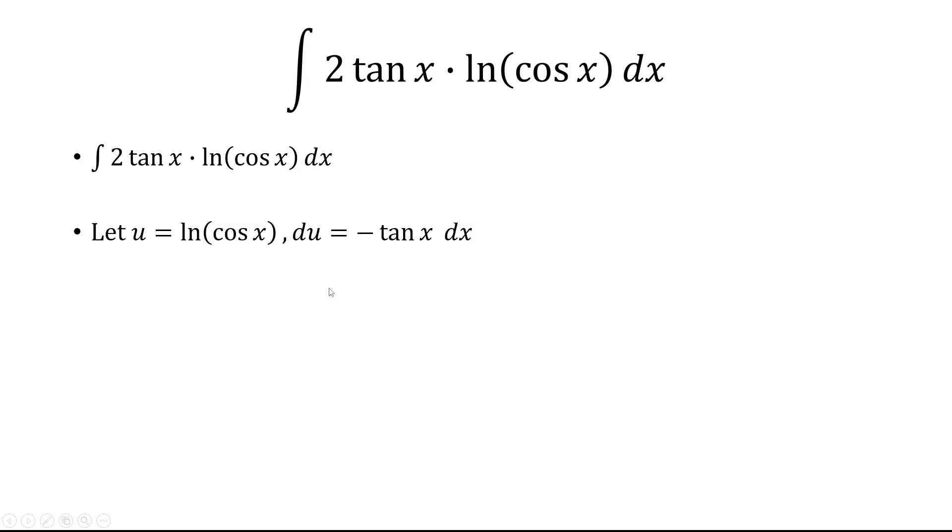We're going to let u equal ln of cosine x, and the derivative will just be 1 over cosine times the derivative of cosine, which is negative sine. That's just going to equal negative tangent x.